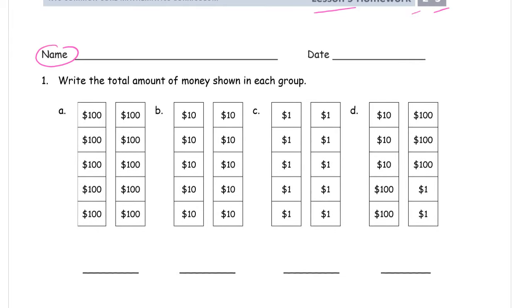Write your name first. Write the total amount of money shown in each group. So here's group A. How much money is there? Well, we have these are 10 frames, right? So we have five group columns.